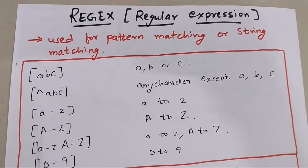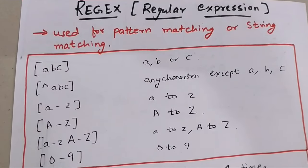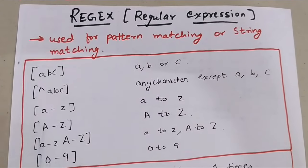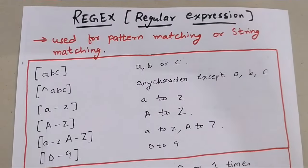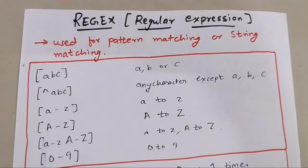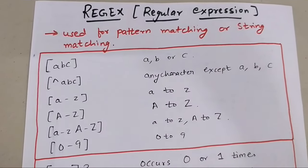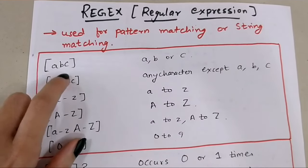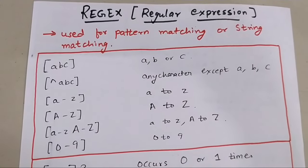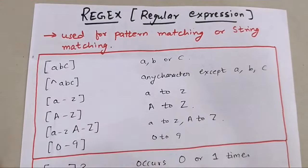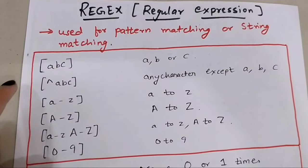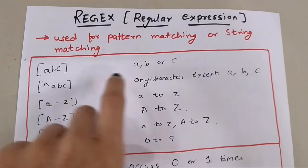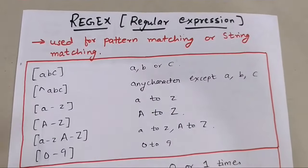For example, if you want the password to contain lowercase alphabets, uppercase alphabets, and one special character, all those rules can be added using regex. Now let's understand how we write them. There are certain rules — when we write brackets and inside write 'abc', it basically means a, b, or c — anything out of abc.